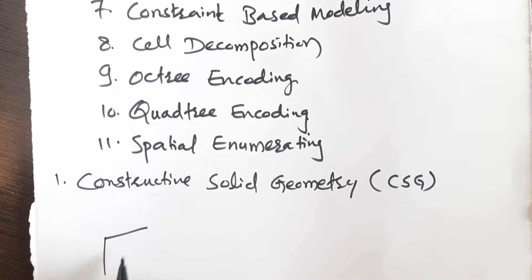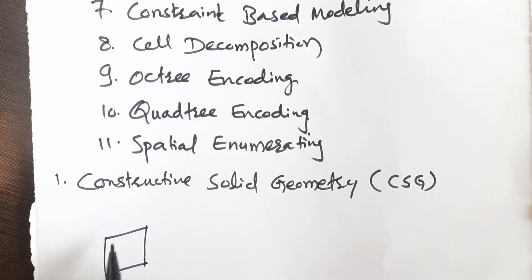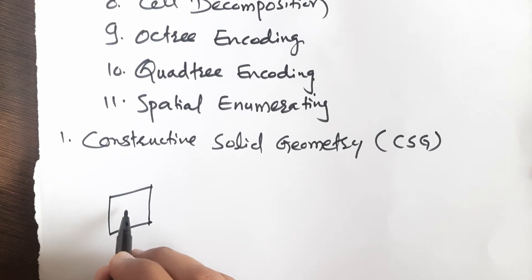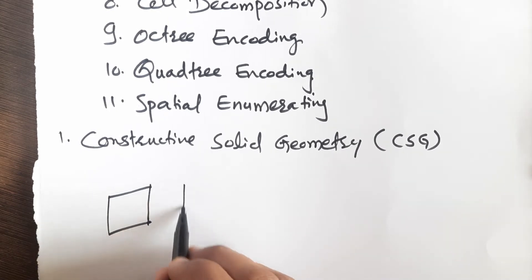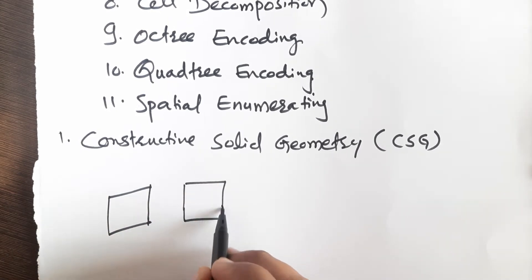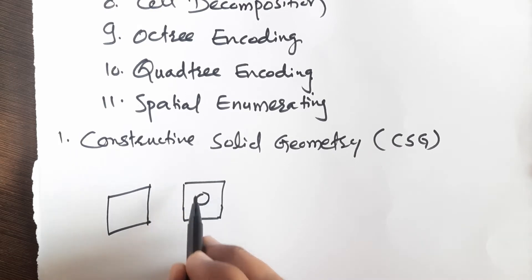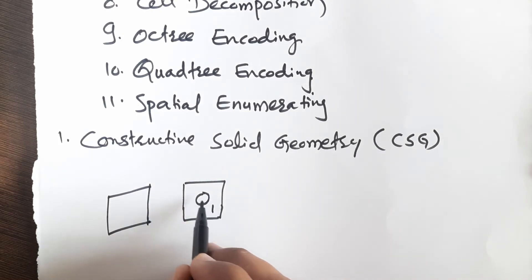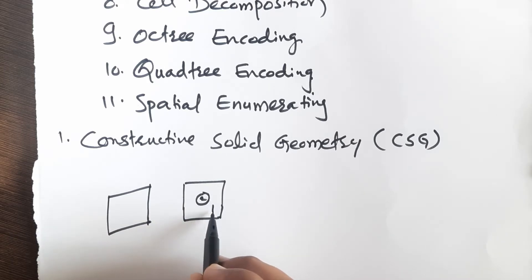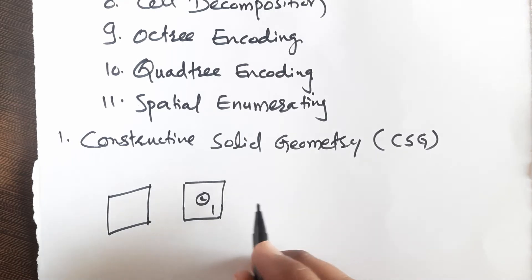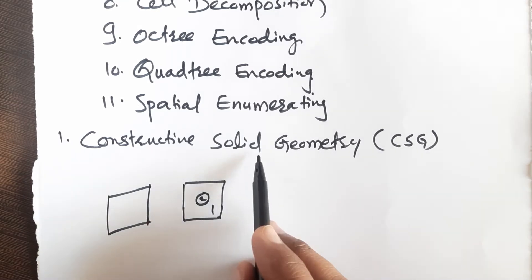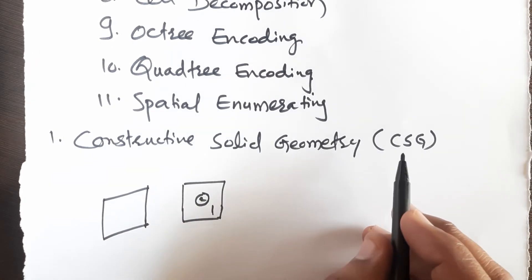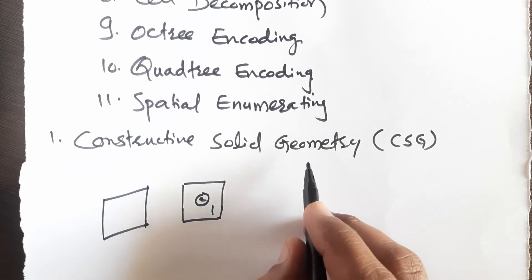For example, if you want to construct a block with a hole, you first create a three-dimensional block, then create a cylinder representing the hole, select the hole, and subtract it from the block. By subtracting the hole from the block, your desired geometry is created. This is how a model is prepared in Constructive Solid Geometry.